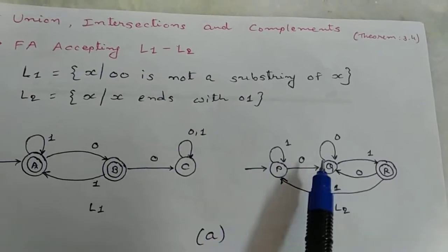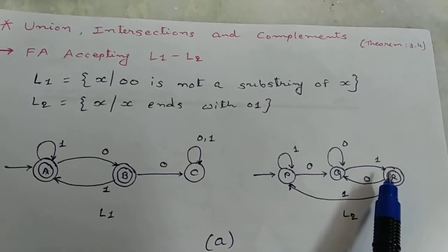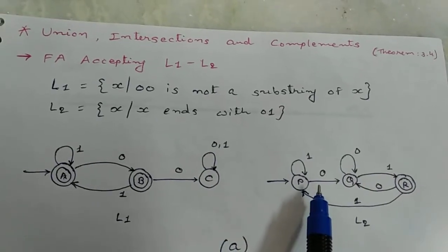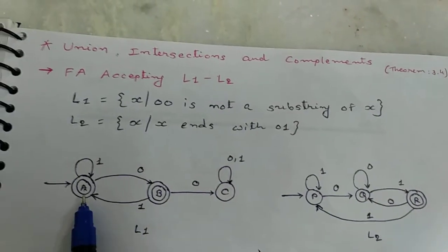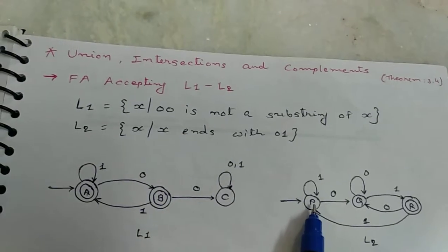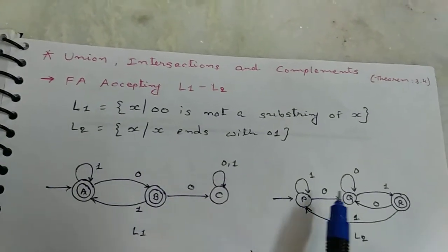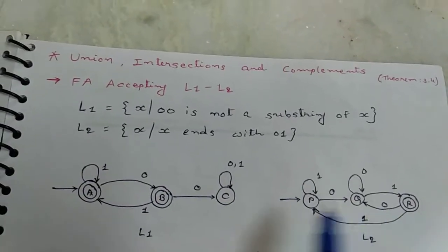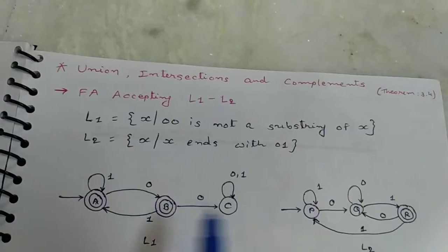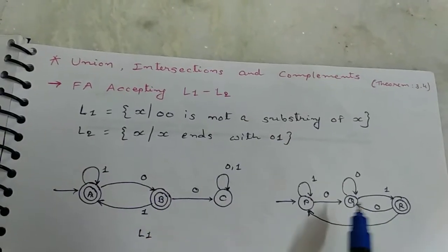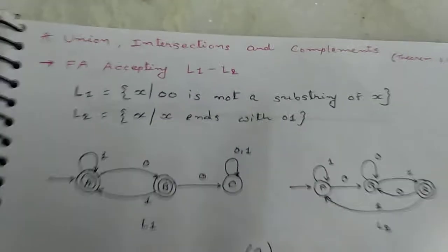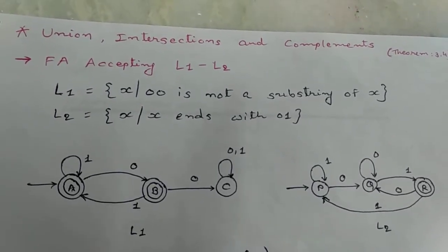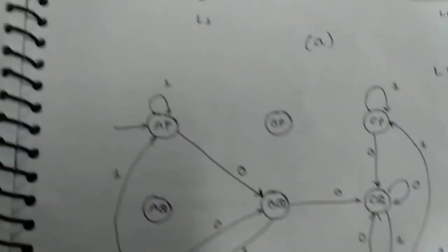First, cross product of L1 and L2 means A is combined with P, A is combined with Q, and A is combined with R. Then after, B is combined with P, B is combined with Q, and B is combined with R. C with P, Q and R.